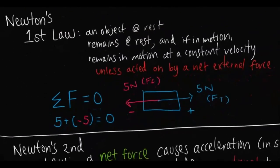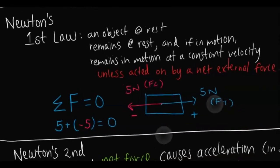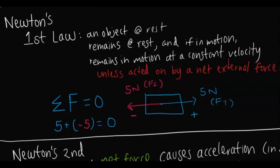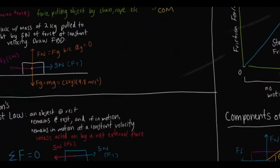Newton's first law states that an object at rest remains at rest, and if it's in motion, it will remain in motion at a constant velocity unless acted upon by a net external force. Revisiting that block with 5 newtons of tension and 5 newtons of friction — that object is either at rest or moving at constant velocity because net force is zero. You can tell the difference by the type of friction, either static or kinetic, which we'll discuss with the chart.